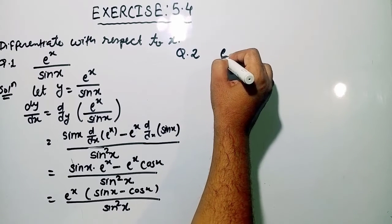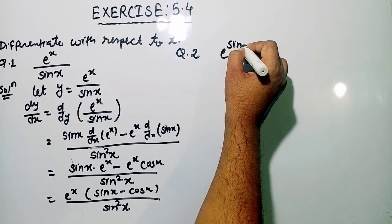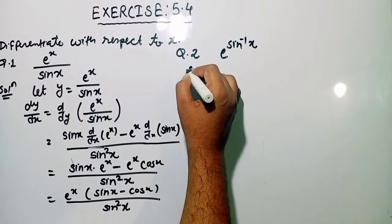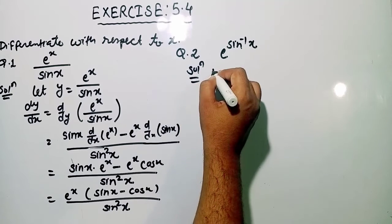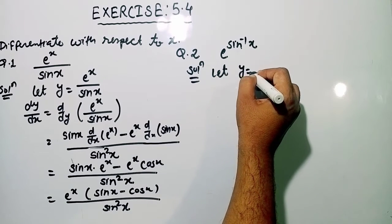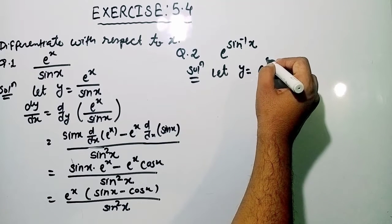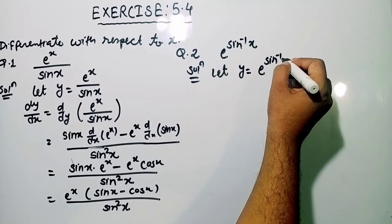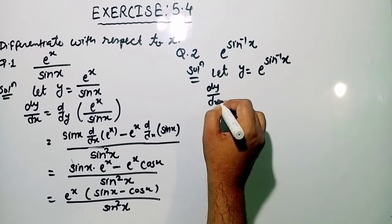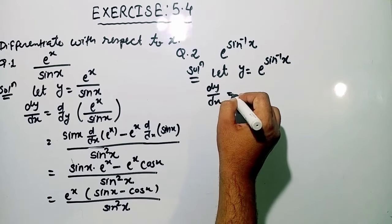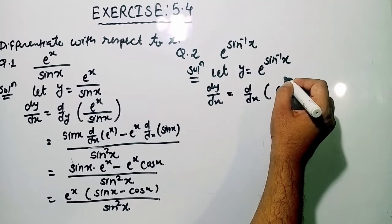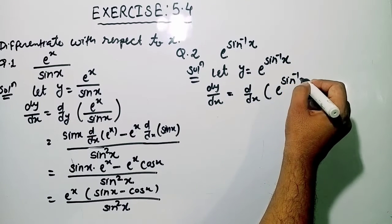Now let us see question number 2: differentiate e raised to the power sin inverse x. So let us consider the solution. Let y is equal to e raised to the power sin inverse x. Now differentiating with respect to x on both sides, so dy by dx of e raised to the power sin inverse x.